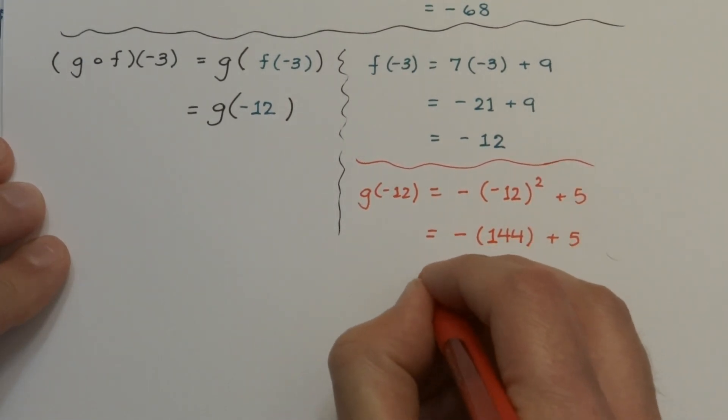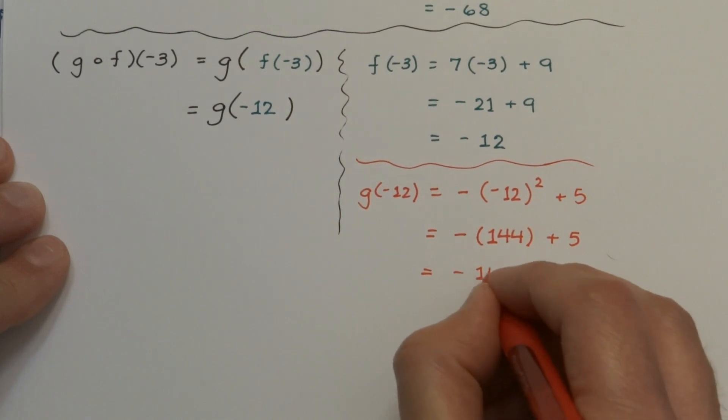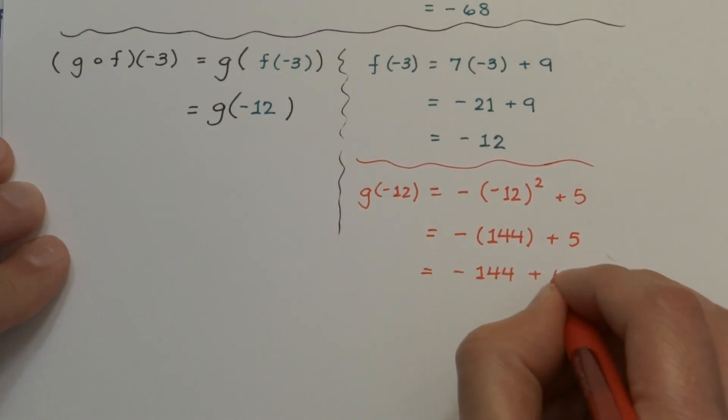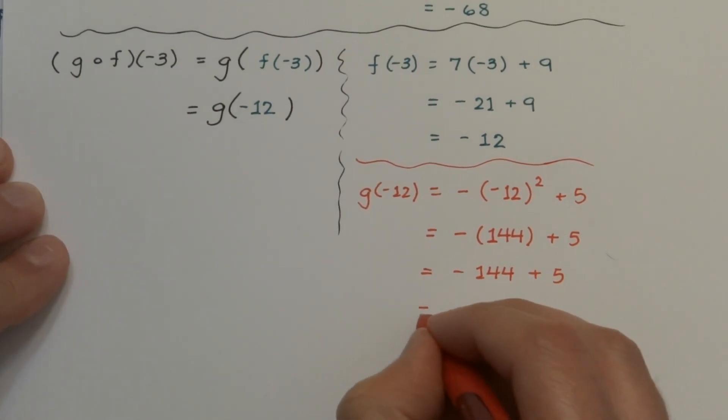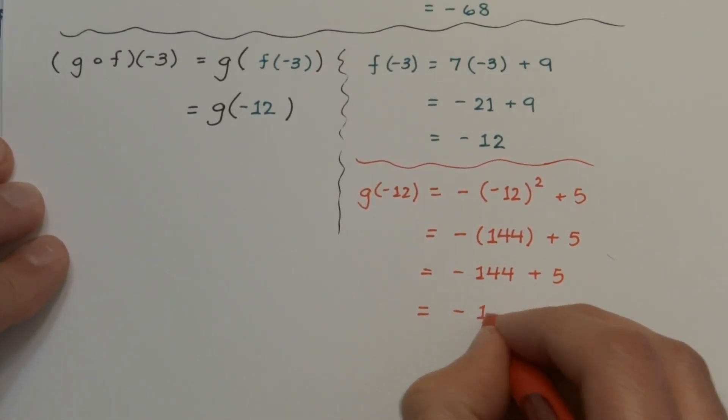And now the negative gets applied, so it's negative 144 plus 5, which gives us a total of negative 139.